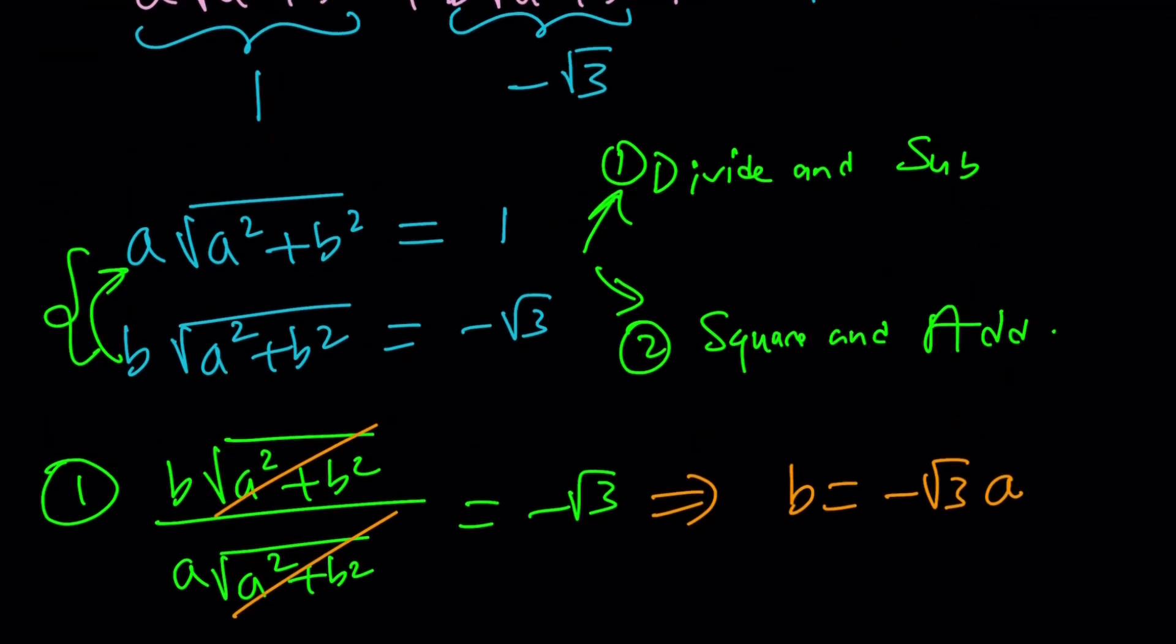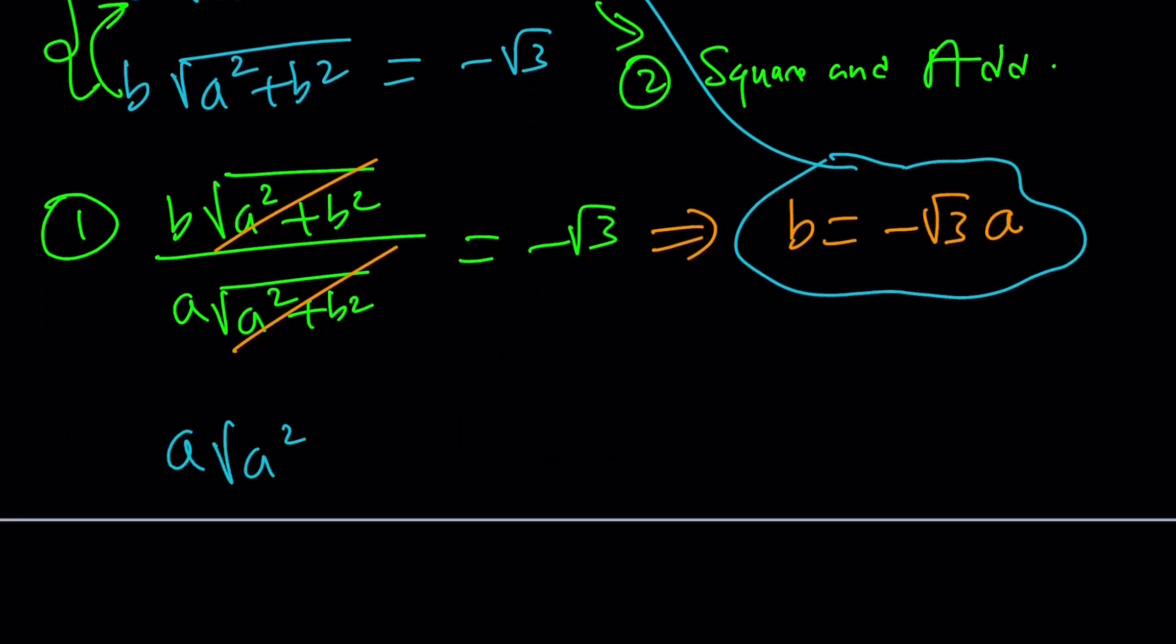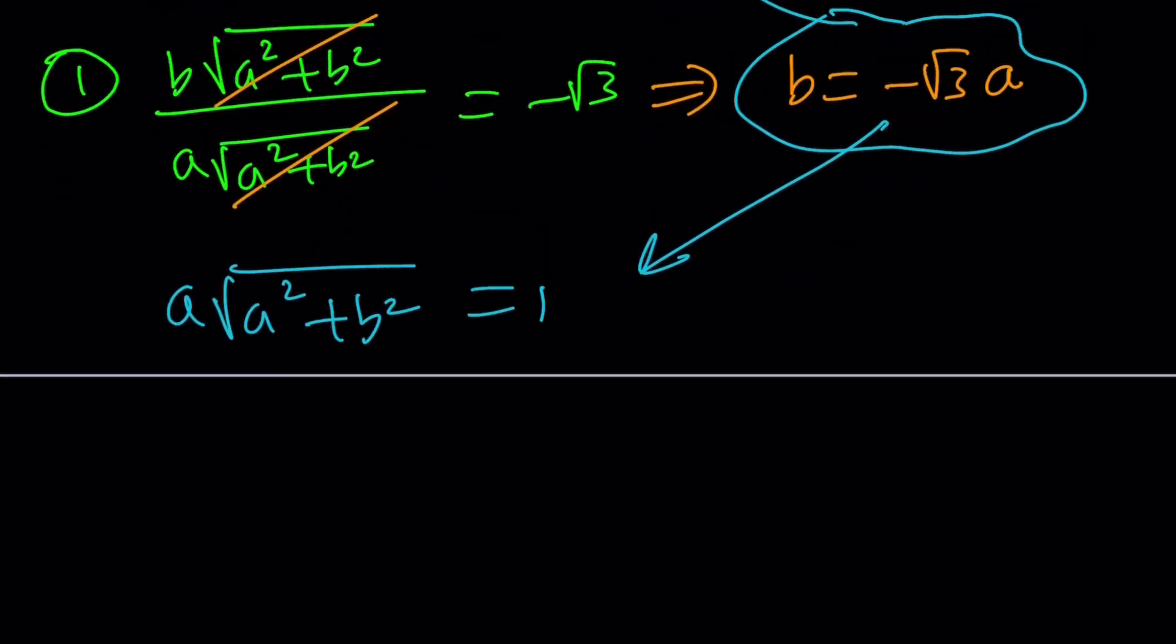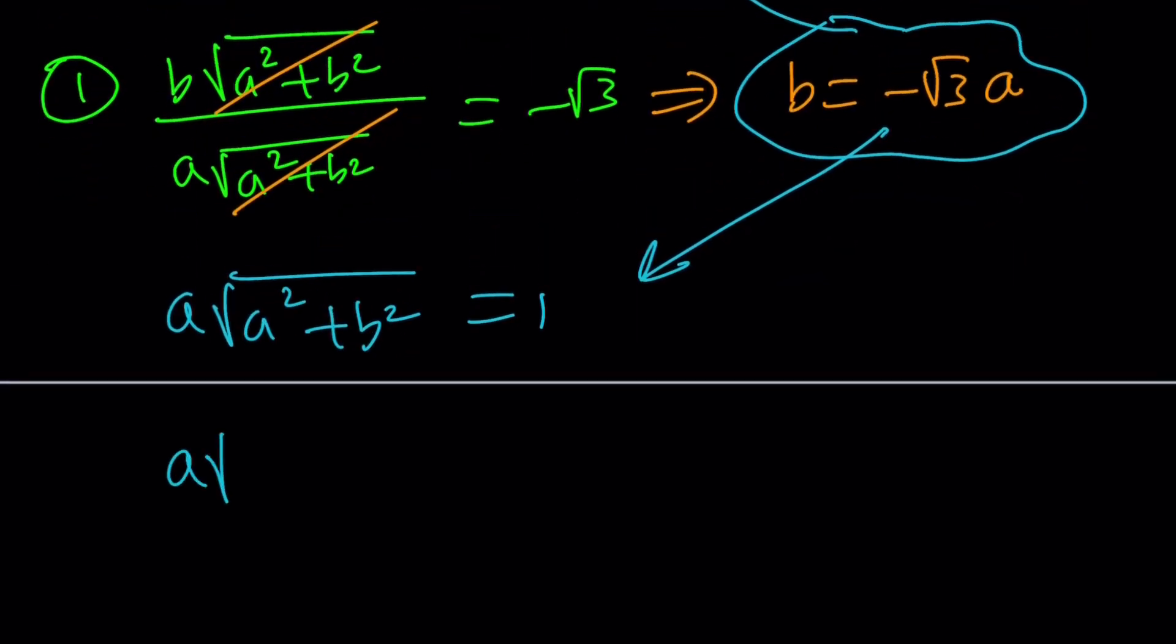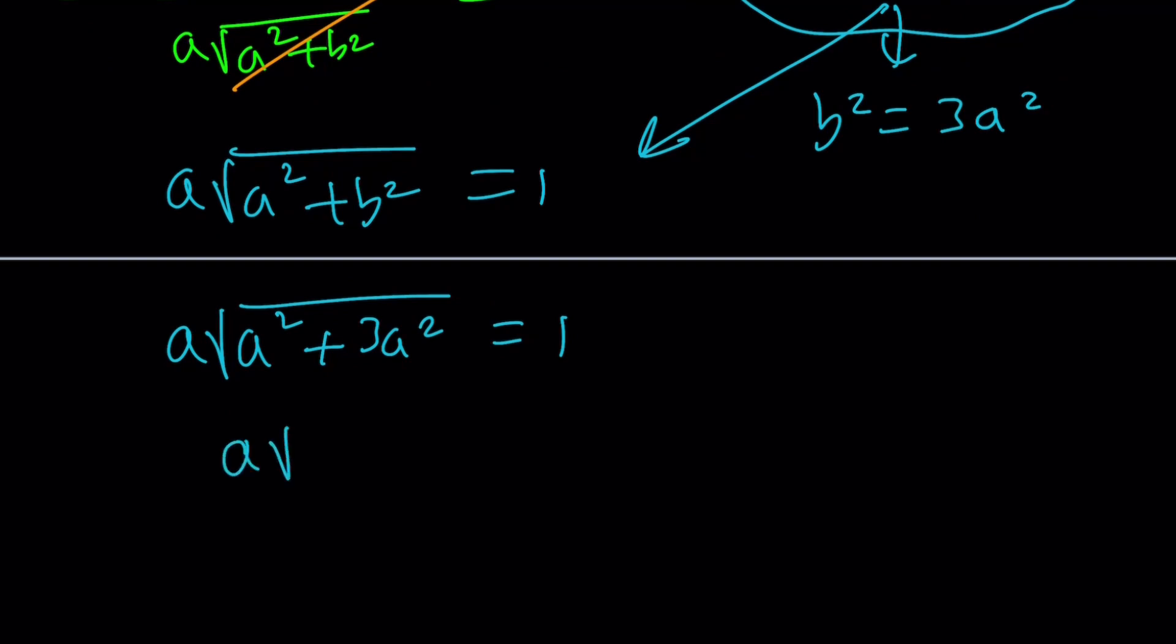Remember, it's divide and sub. So, we're going to sub this into one of the equations. Doesn't matter which one, but I like the first one a little better. So, I'm going to plug it in here. We have this equation. Let me rewrite it. And now we're going to replace B with that, negative root 3 A. So, A times, and if you square it, if you square B, from here you get 3 A squared, right? When you square this number, it becomes positive. Remember that? So, we're going to get A squared plus 3 A squared equals 1. A squared plus 3 A squared is equal to 4 A squared.